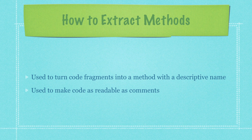So when exactly would you extract a method? All that means is you take a block of code that is really busy and you pull it out, stick it in a method, and then call the method rather than having that block of code inline. The reason you're going to use this is it turns your code fragments that are all bunched together into nice neat methods with descriptive names. The goal is to make your code as readable as comments.